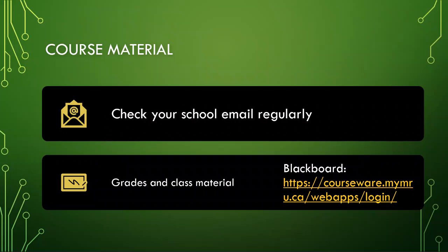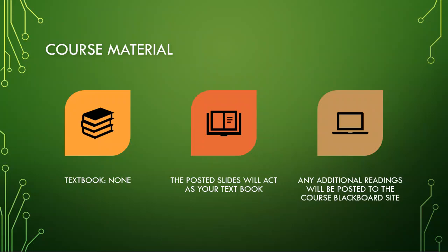Check your school emails regularly — that's one way we can contact you. Make sure to access everything through the Blackboard page and the course Google page. For course materials, there is no textbook. The course outline lists some optional books, and there are links to free data structures books if you need them, but there is tons of material on data structures and algorithms online — that's why we don't need an expensive textbook. The posted slides will act as your textbook, and anything on the midterm and final will be based on what I've presented in class or any additional readings I've posted to Blackboard.